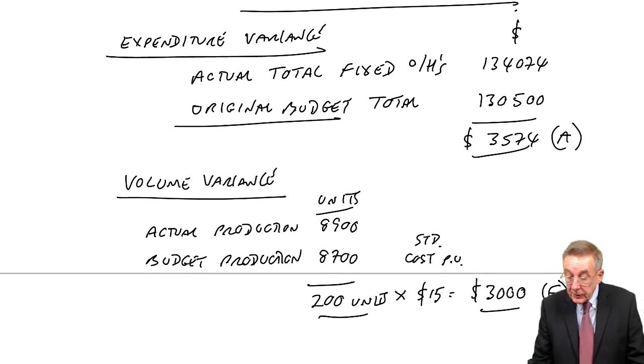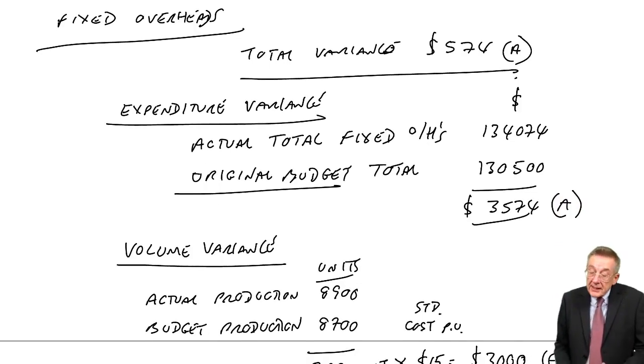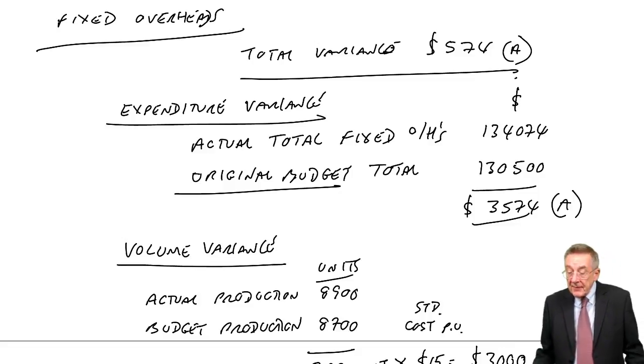And of course, the two together do work. 3,574 adverse and 3,000 favourable does explain the total of 574 adverse.